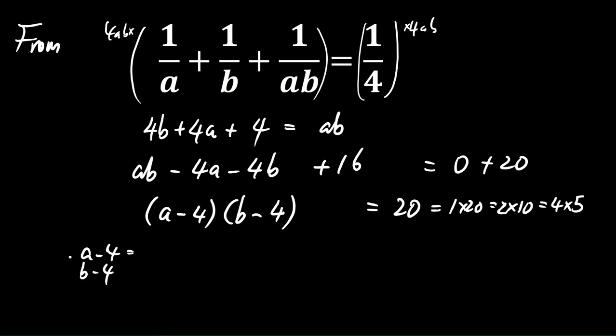So (a - 4, b - 4) will equal either (1, 20), (2, 10), (4, 5), (5, 4), (10, 2), or (20, 1).